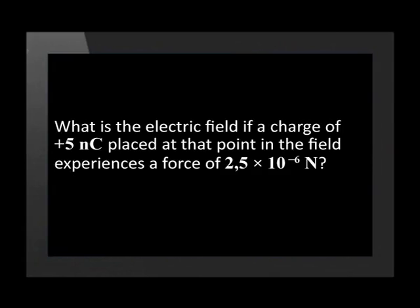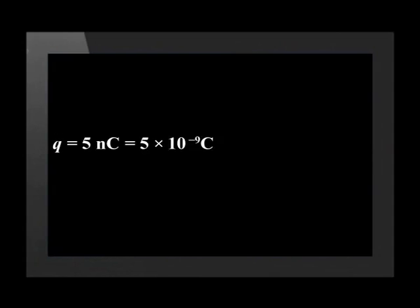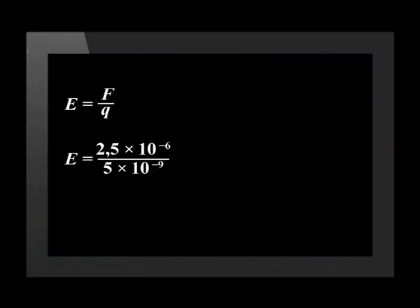Let us do some examples. What is the electric field if a charge of positive 5 nanocoulombs placed at that point in the field experiences a force of 2.5 times 10 to the minus 6 newtons? Charge is 5 nanocoulombs, which converts to 5 times 10 to the minus 9 coulombs. Force is 2.5 times 10 to the minus 6 newtons. Substituting into E equals F over Q gives 2.5 times 10 to the minus 6 over 5 times 10 to the minus 9, which gives us 500 newtons per coulomb.